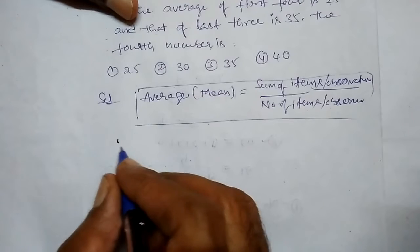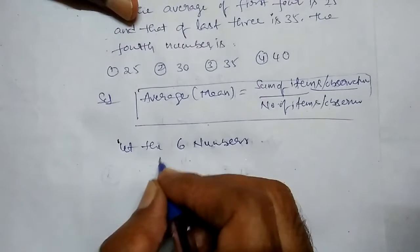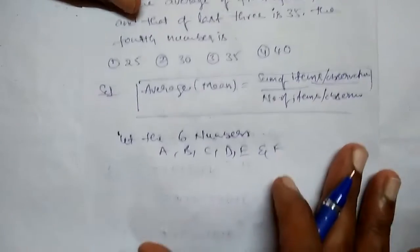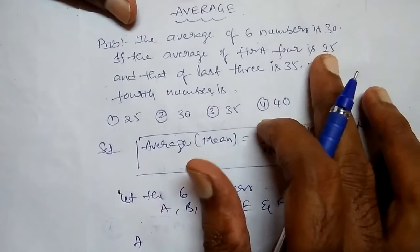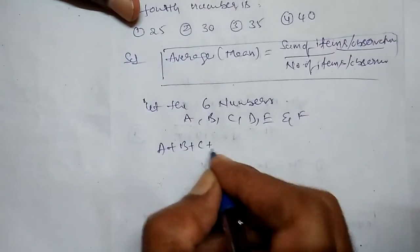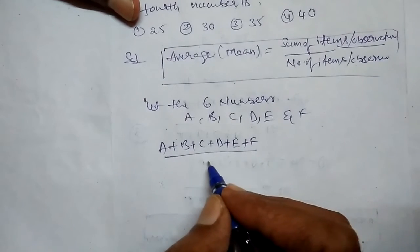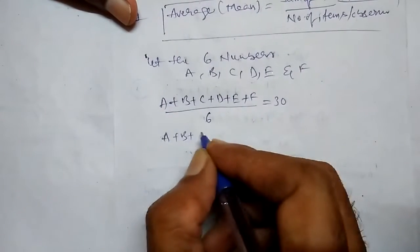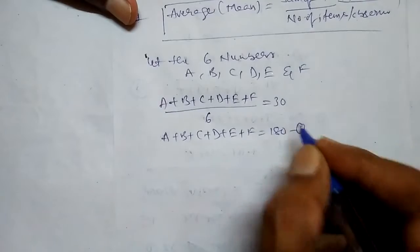Let the six numbers be A, B, C, D, E, and F. The average of six numbers is 30, so A plus B plus C plus D plus E plus F divided by 6 is equal to 30. Therefore, A plus B plus C plus D plus E plus F is equal to 180. This is the first equation.